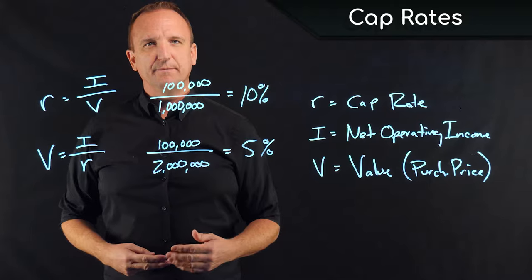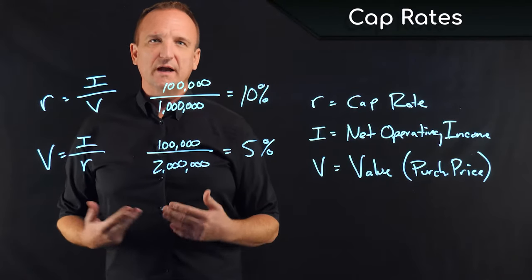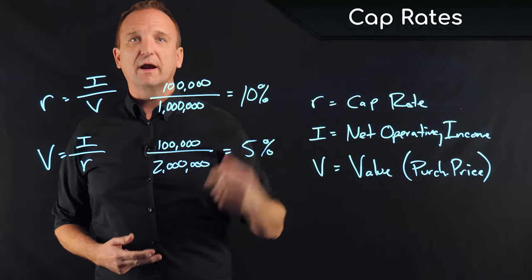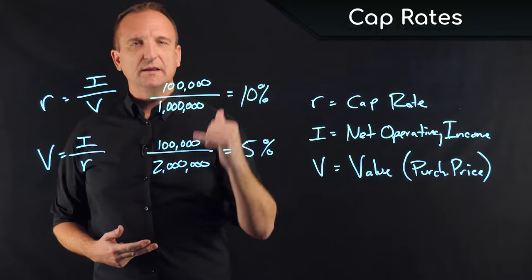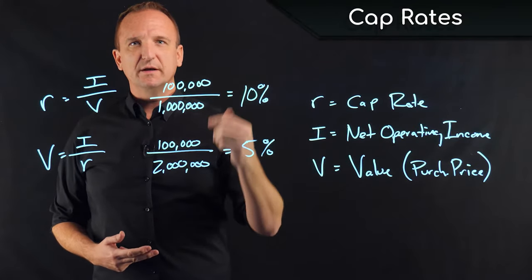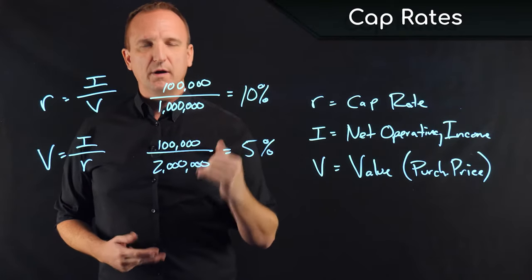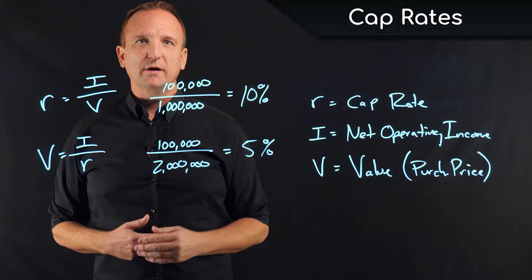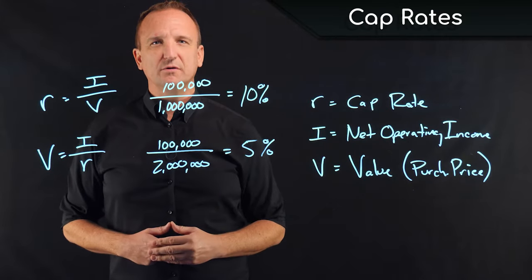So what this tells us is that if an investor is acting as the buyer, then they typically want a higher cap rate. They want to have to pay less money for the same net income rather than more money. So buyers are typically looking for higher cap rates or a higher unleveraged return.